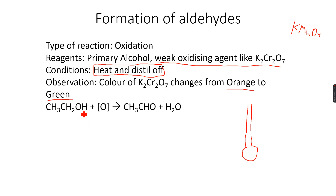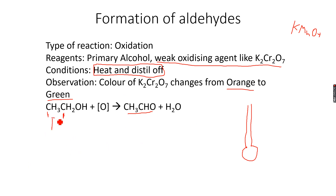This primary alcohol — primary alcohols are ones where the carbon atom attached to the alcohol group is attached to only one other carbon atom. So it's a primary alcohol, and it oxidizes to give an aldehyde when you're heating and distilling off. For example, we use ethanol and oxidize it to give ethanal, which is an aldehyde.